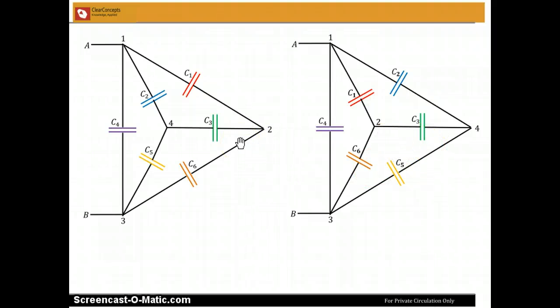Now since the capacitances, all the capacitances are of the same value, the figure on the left and the figure on the right should not produce any difference in what is happening at C3. And so we can conclude therefore that the potential at junction 2 and at junction 4 are the same.